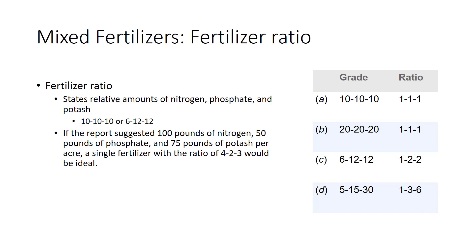A grower may select fertilizer with the ratio suggested by soil test reports. For instance, if the report suggested 100 lbs of nitrogen, 50 lbs of phosphate, and 75 lbs of potash per acre, a single fertilizer with the ratio of 4-2-3 would be ideal.